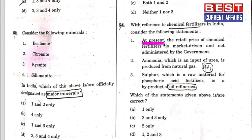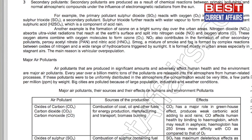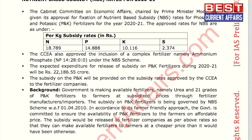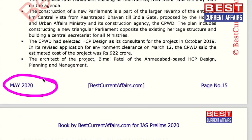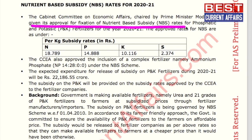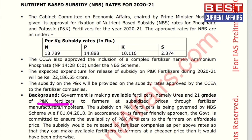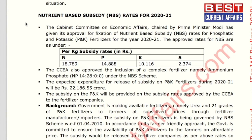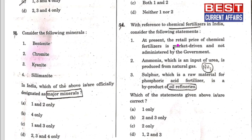With reference to chemical fertilizers in India: statement one says the retail price is market-driven and not administered by the government — this is wrong. From our 2020 current affairs booklet, page 15: the cabinet committee on economic affairs approved nutrient-based subsidy rates for phosphatic fertilizers. The government makes urea and 21 grades of P and K fertilizers available to farmers at subsidized prices. The retail prices are administered by the government, not market-driven. Statement one is wrong, leaving options B and C.